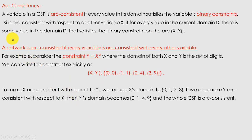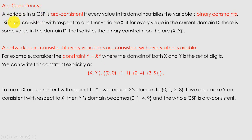Next, we talk about arc consistency. A variable in a CSP is arc consistent if every value in its domain satisfies the variable's binary constraint — binary meaning it involves two variables. More precisely, xi is arc consistent with respect to another variable xj if for every value in the current domain di, there is some value in the domain dj that satisfies the binary constraint on the arc (xi, xj).